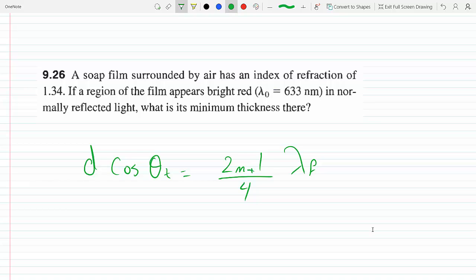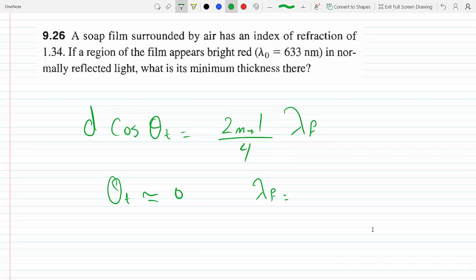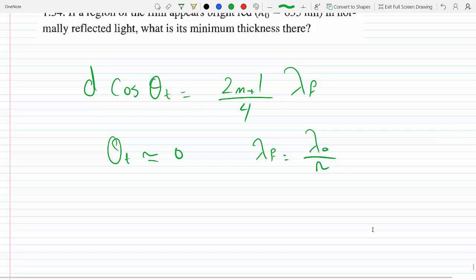This is normally reflected, yes, so that means theta_t is about 0. The lambda, the wavelength, is the one in vacuum divided by the index of refraction. If we take m equals 0, that's going to give us the minimum thickness. So then we have d cosine 0.